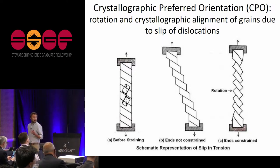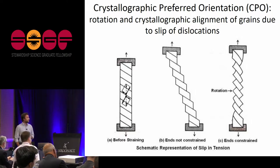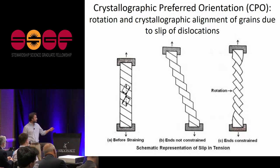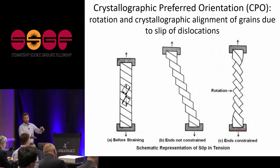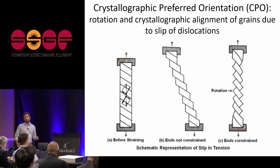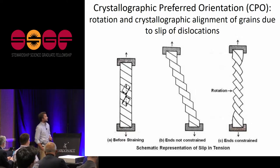Another important microstructural modification in my research is crystallographic preferred orientation, or CPO. When material is strained — imagine a single crystal in tension with an inclined slip plane — if the ends are constrained, the slip planes rotate to accommodate deformation. In a rock, neighboring grains constrain the deformation, causing rotation and alignment of crystallographic planes throughout the rock.